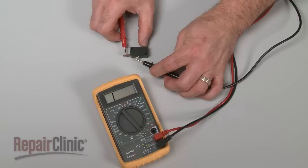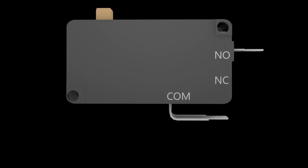If the meter's needle does not move, or the digital display does not change significantly, there is no continuity, which means the switch has failed.